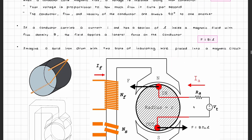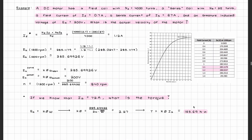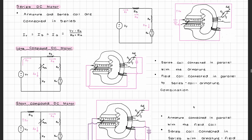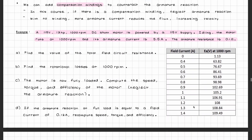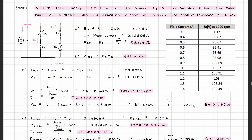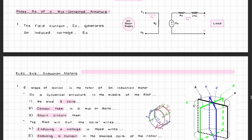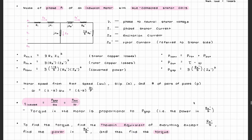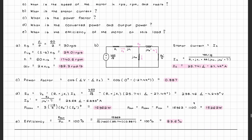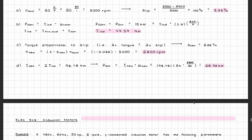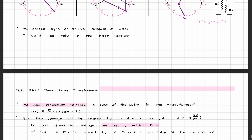You'll then cover DC machines, starting with the fundamentals of how a linear DC machine works before moving into DC motors. You'll learn about the different types of excitations for a DC motor and how to calculate speeds, torques, and currents. Lastly, you'll cover synchronous motors and generators and induction motors, which share similar characteristics and calculations. You'll learn how to draw the equivalent diagram of a synchronous machine, the equivalent circuit for an induction motor, and how to calculate motor torque and slip.